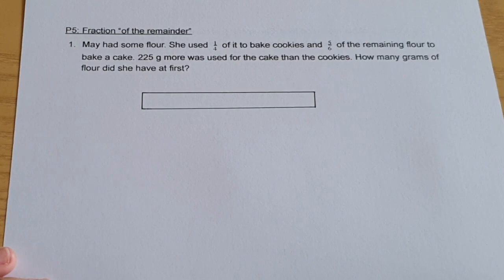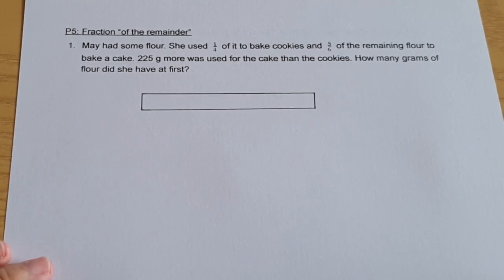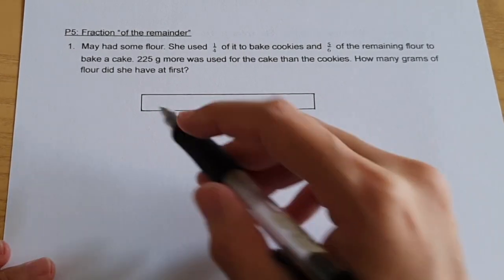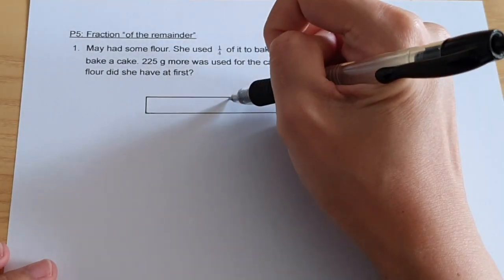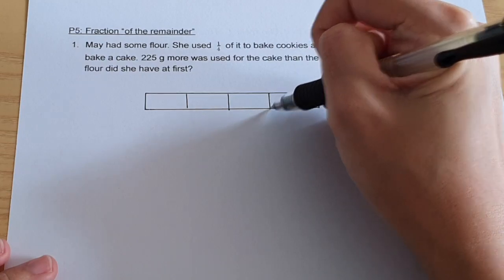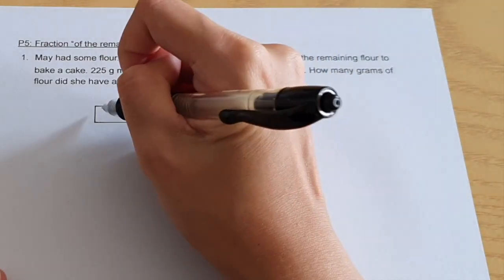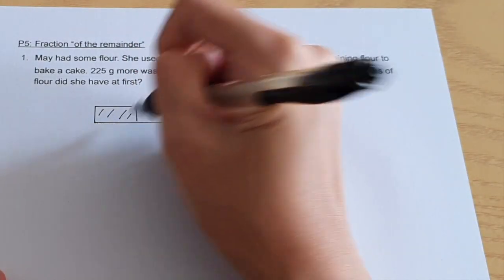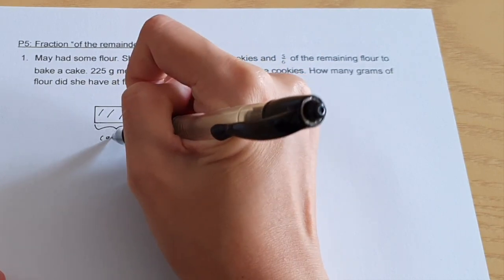Question one, Mei had some flour. She used one quarter of it to bake cookies. So we're going to cut our long bar into four parts, right in the middle. So she used one quarter, this is to bake cookies.